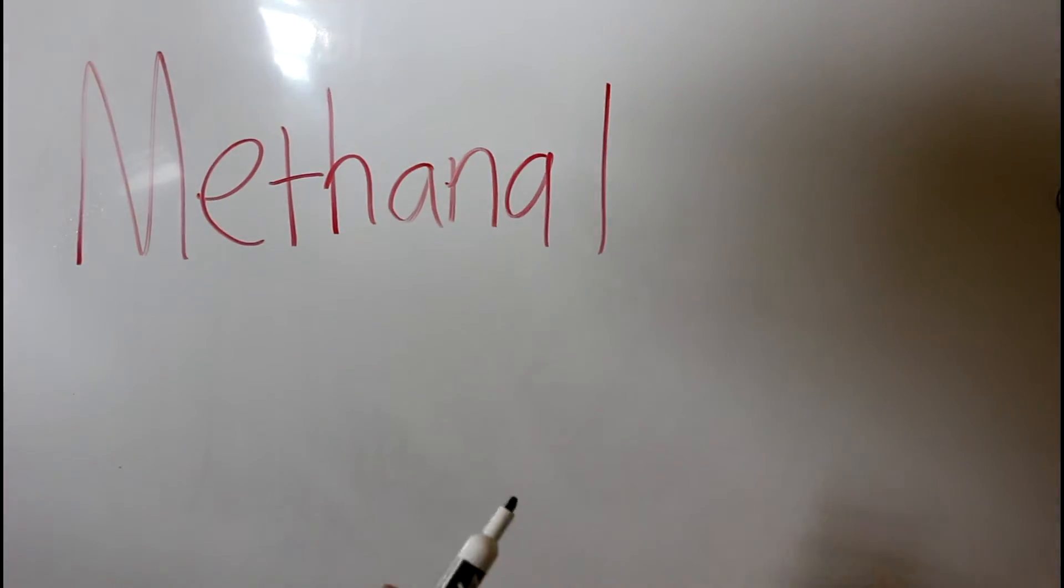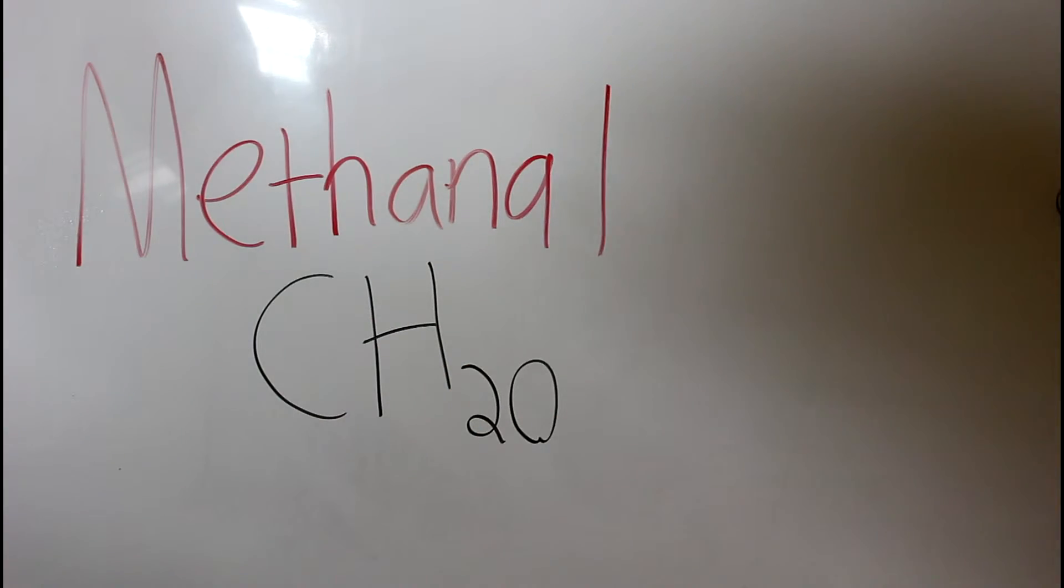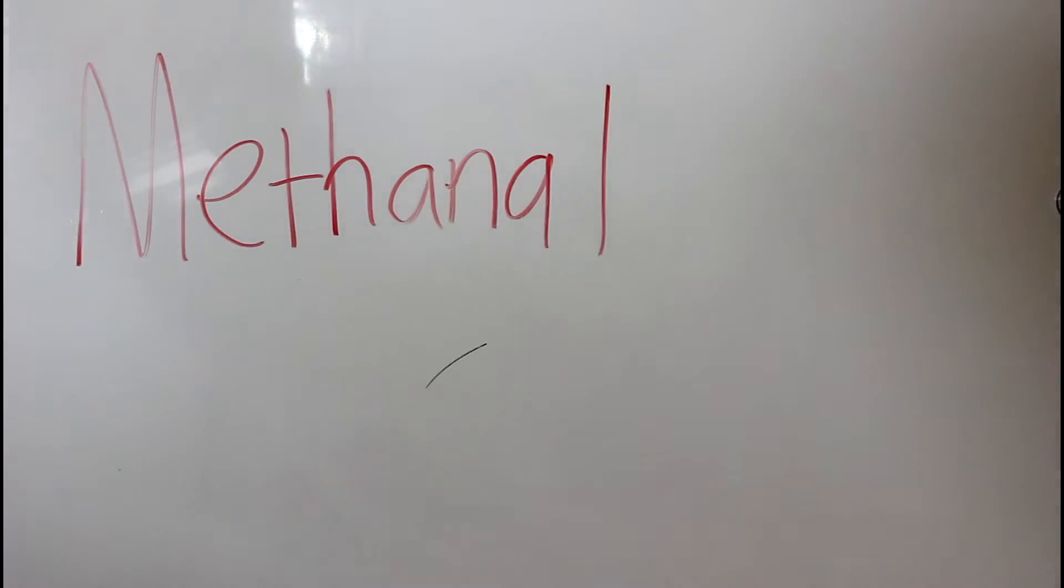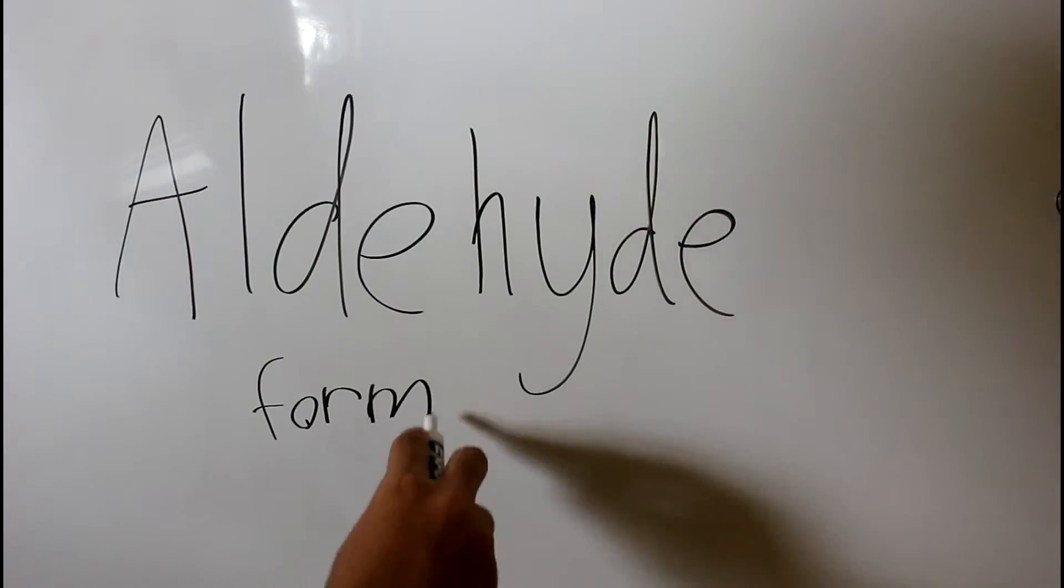And now for methanal. Methanal is a chemical with the formula CH2O. Methanal is the simplest aldehyde and is also known by its common name, formaldehyde.